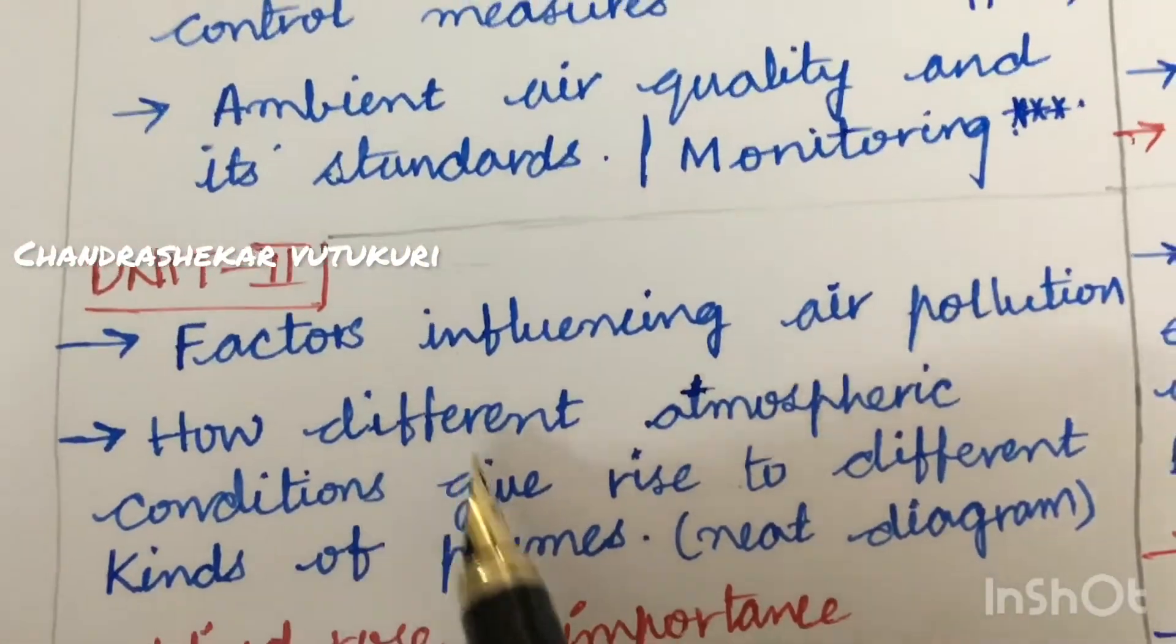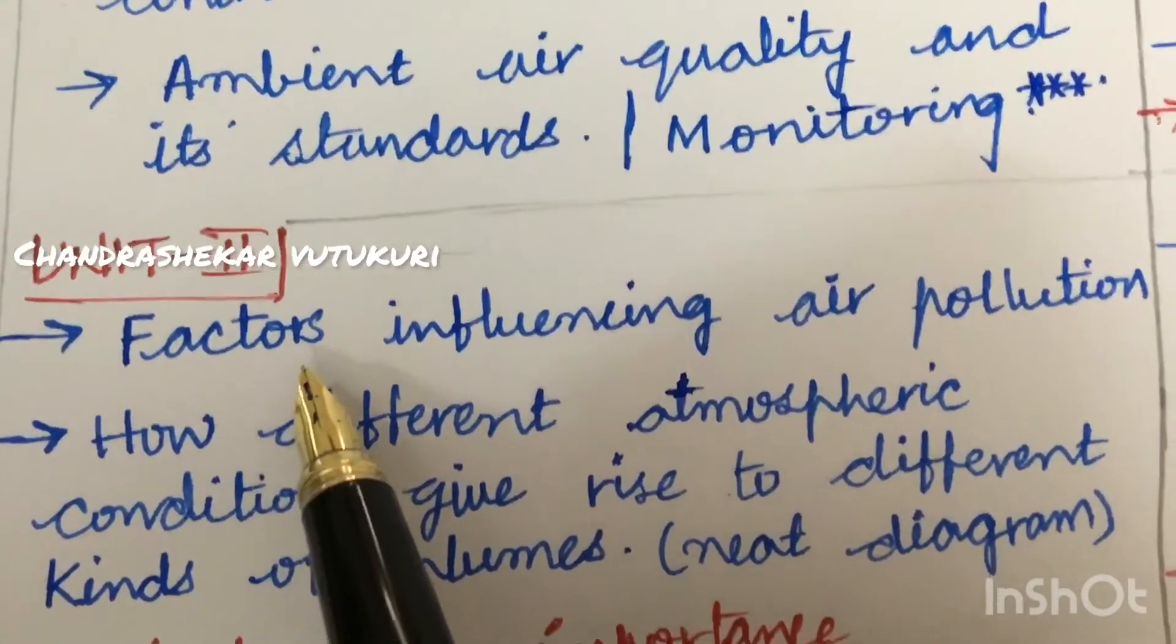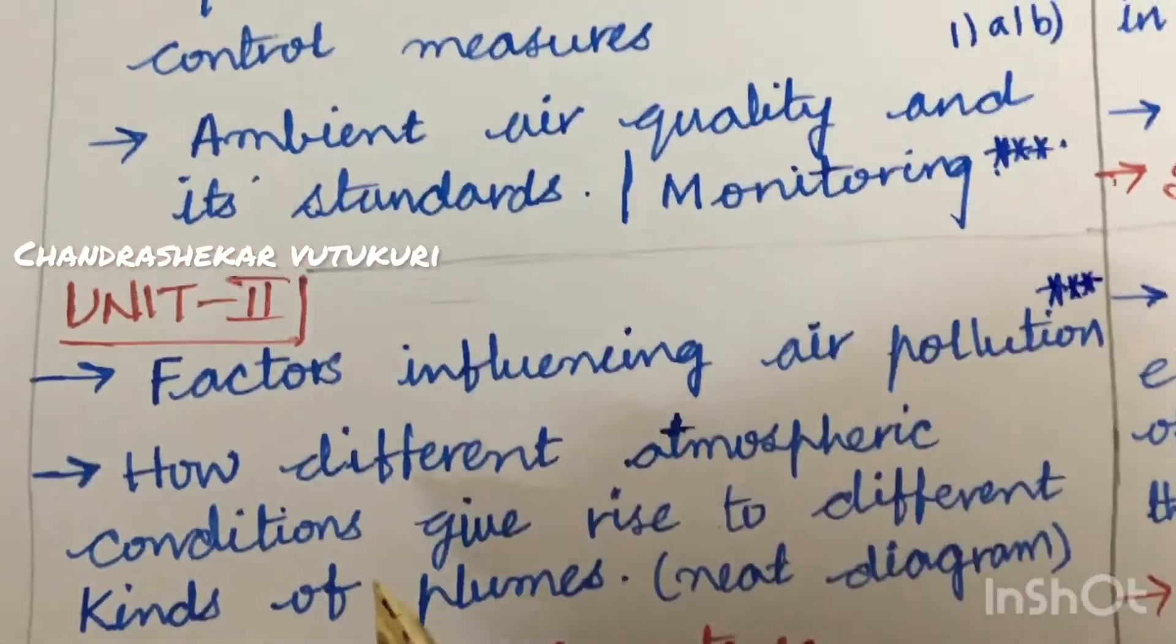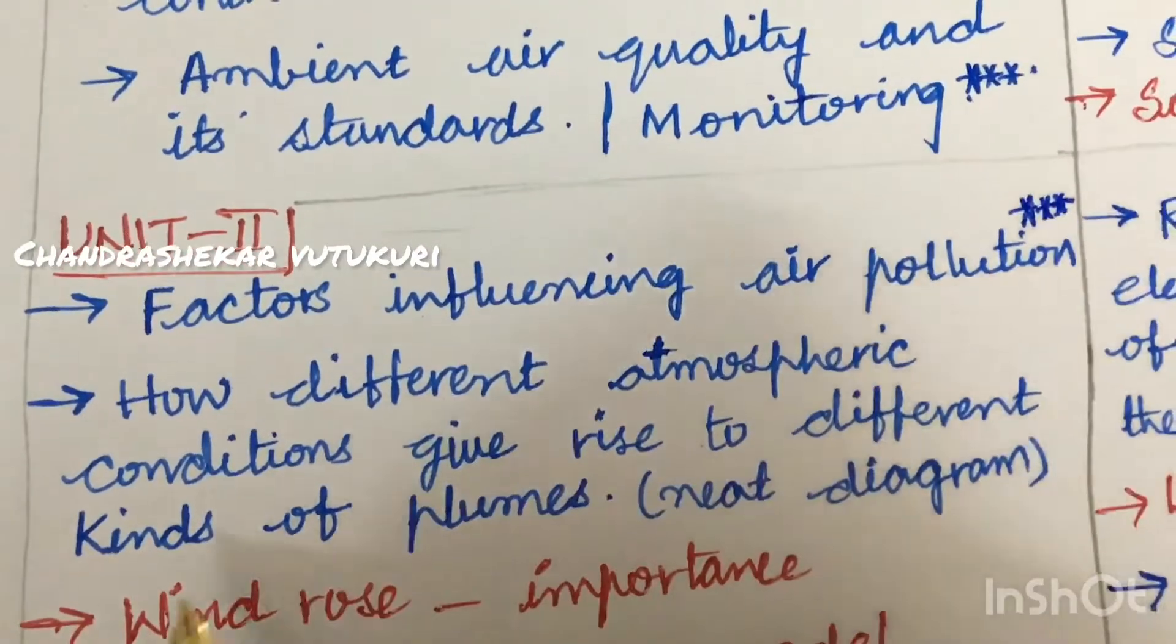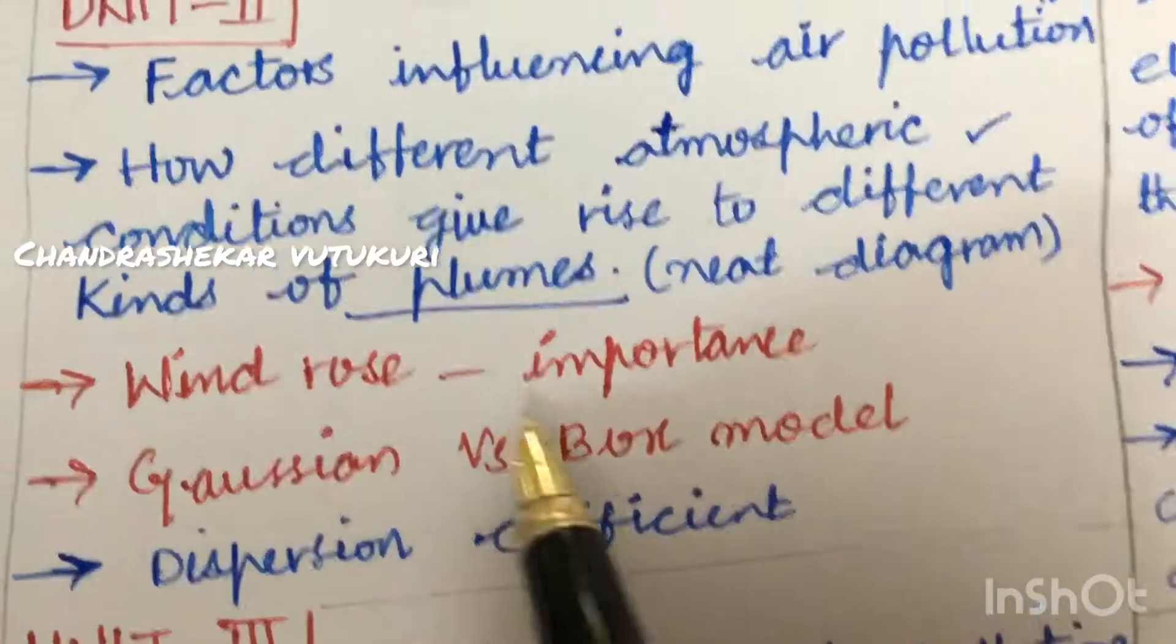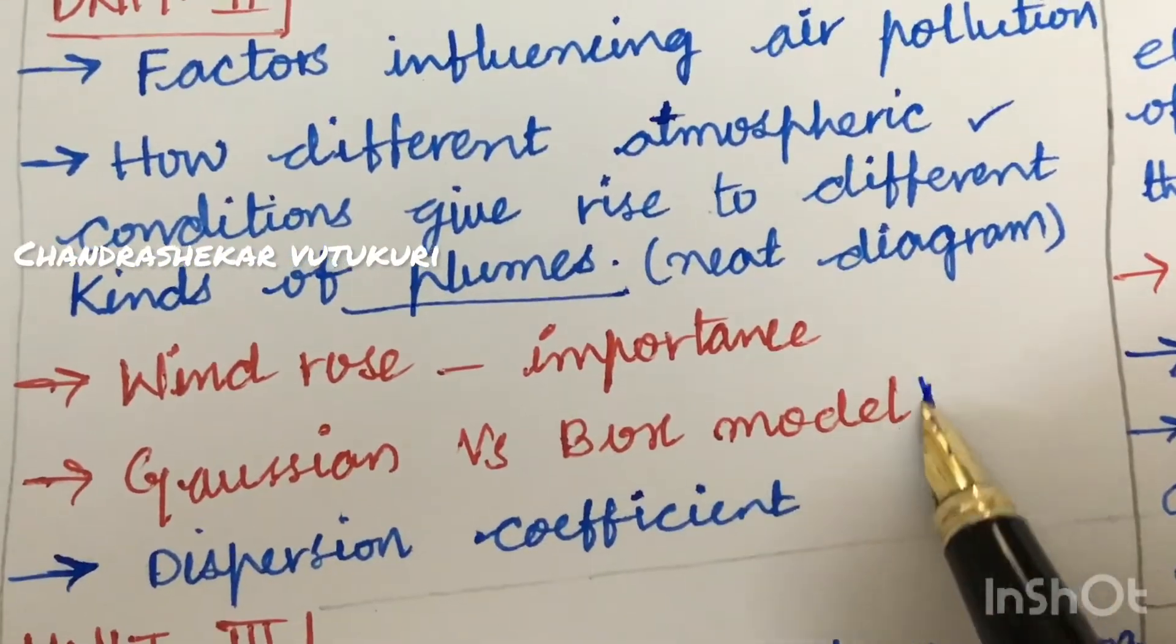Later from the unit, we are going to get 2 questions for this time. It is all about the very important and gunshot question - factors influencing air pollution is said to be very very important and top gunshot question. How different atmospheric conditions give rise to different kinds of plumes is also said to be very important.